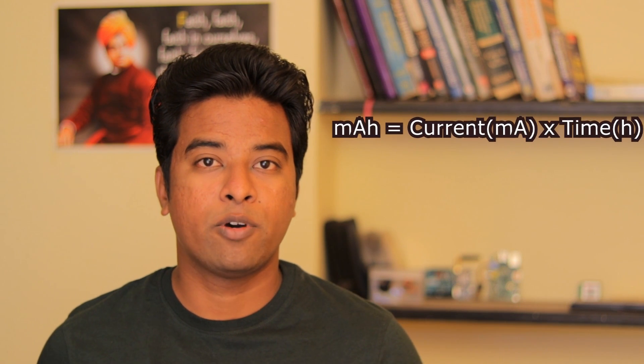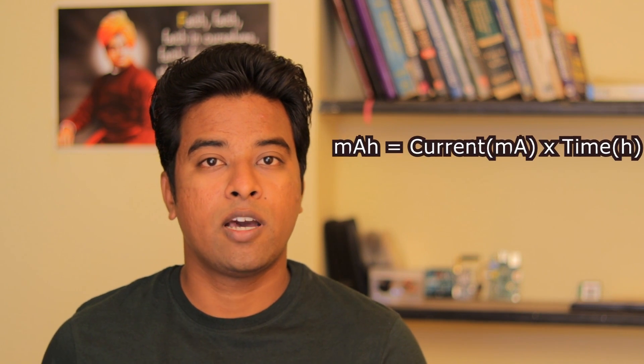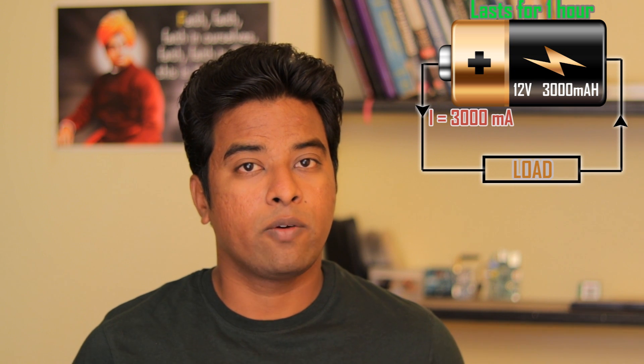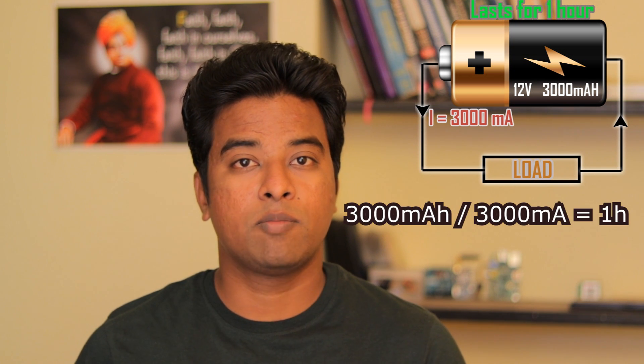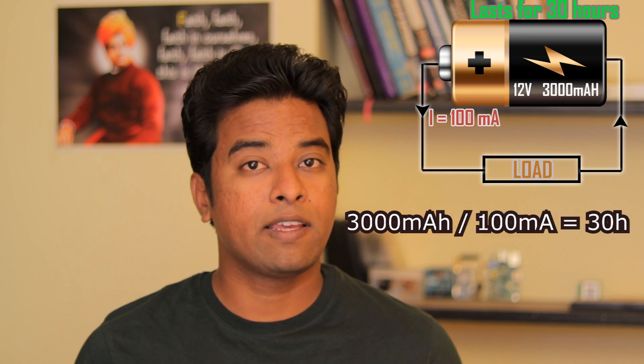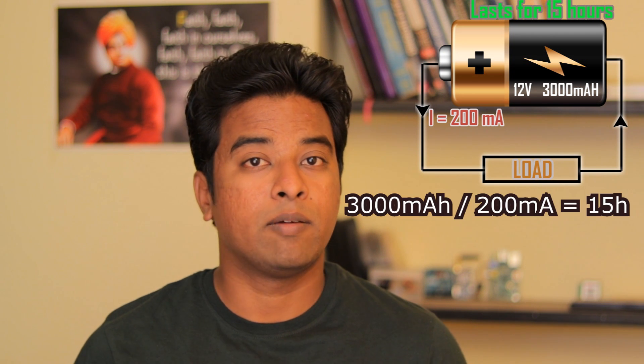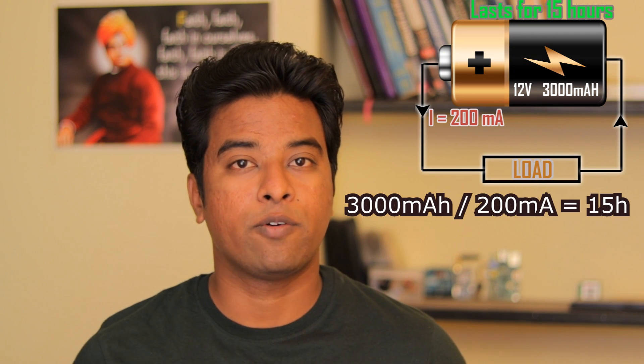mAh, which is milliampere hours, is the product of current expressed in milliamperes multiplied by time expressed in hours. When a manufacturer says this is a 12 volts 3000 mAh battery, what he means is the battery can supply 12 volts to the load for one hour when the load is drawing 3000 milliamperes. Similarly, when the load is drawing 100 milliamperes, the battery can supply 12 volts for 30 hours, and when the load is drawing 200 milliamperes, it can supply 12 volts for 15 hours.